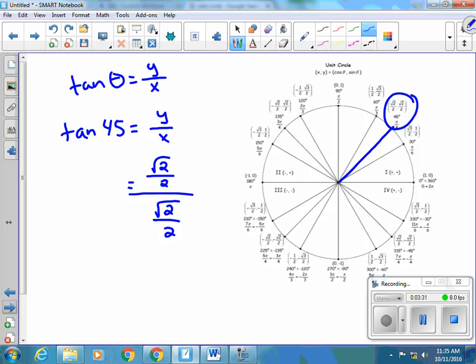So I would have the square root of 2 over 2 divided by the square root of 2 over 2. Now remember, when I'm dealing with division of fractions, it's really the multiplication of the reciprocal. So the square root of 2 over 2 times 2 over square root 2. So if I look at that, that's actually going to cancel to be 1. So the tangent of 45 equals 1.